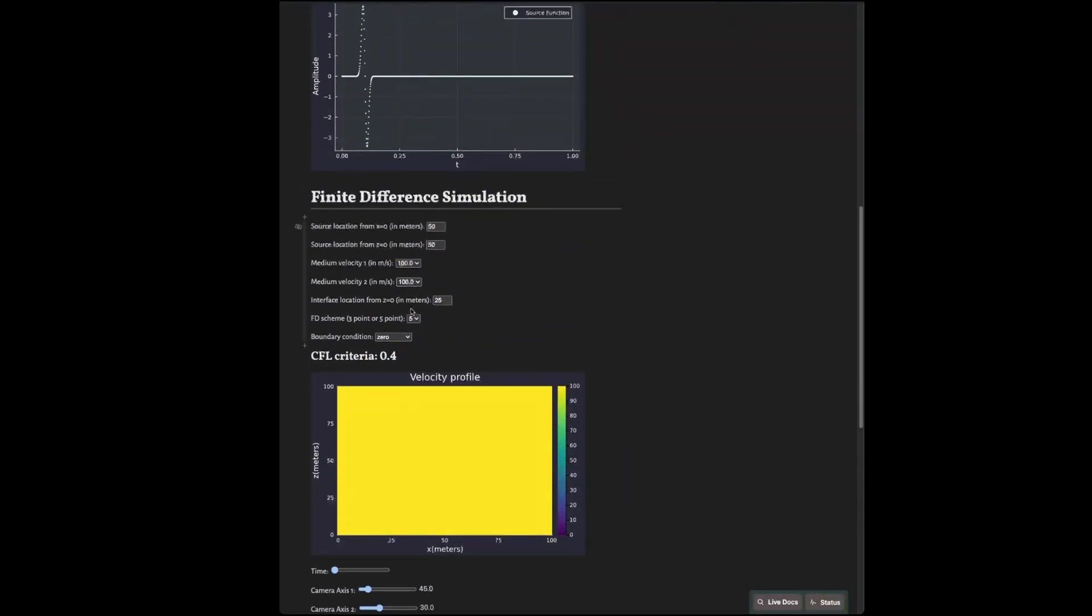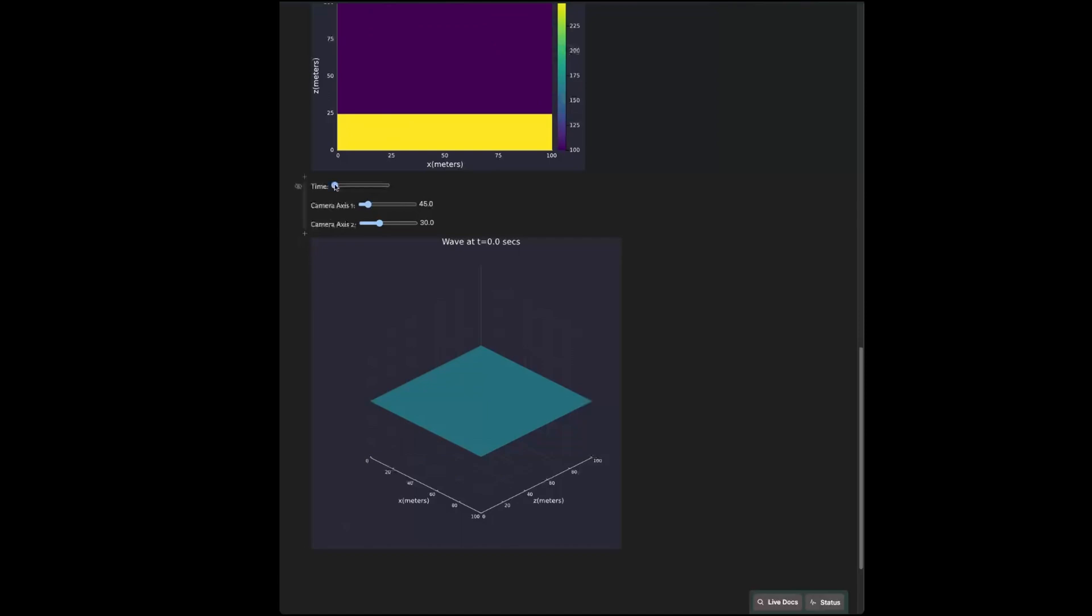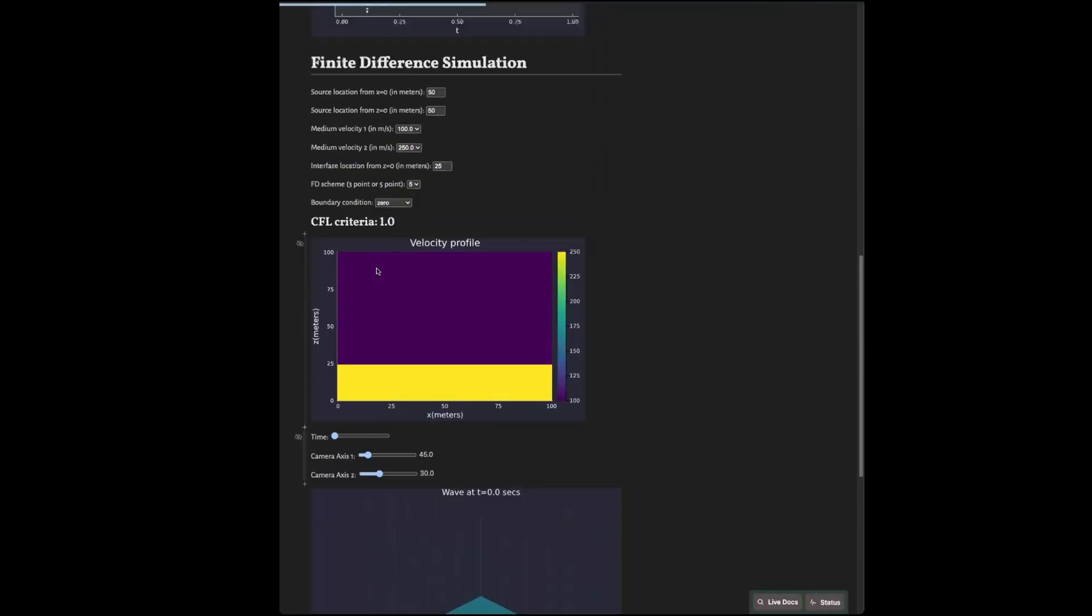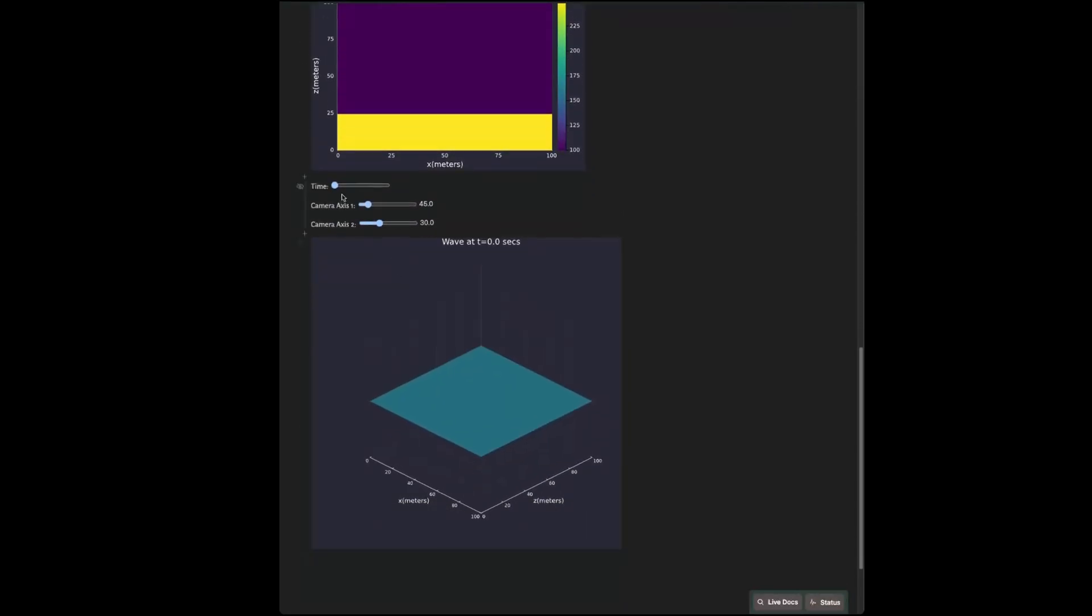Heterogeneity in the medium will make things quite interesting. See how the reflections are generated when the waves reach the interface. It will be clearer if I switch to absorbing boundary conditions. It's as if the velocity interface acts as a boundary in itself.